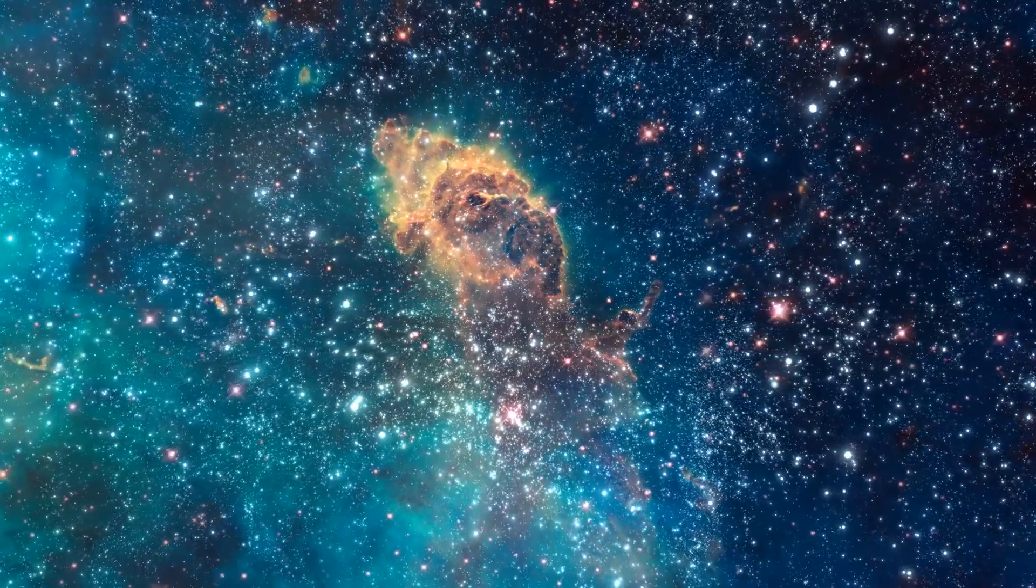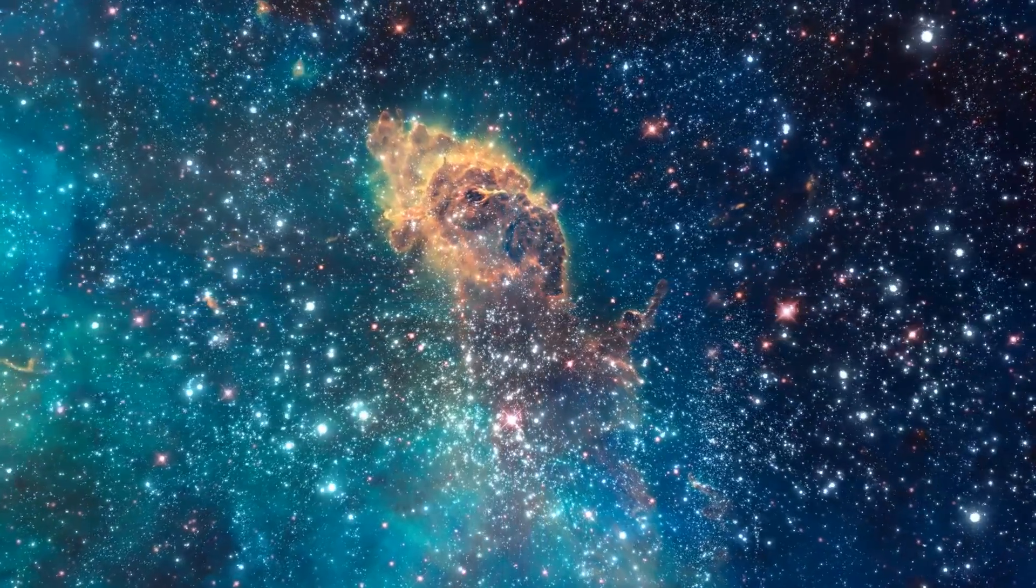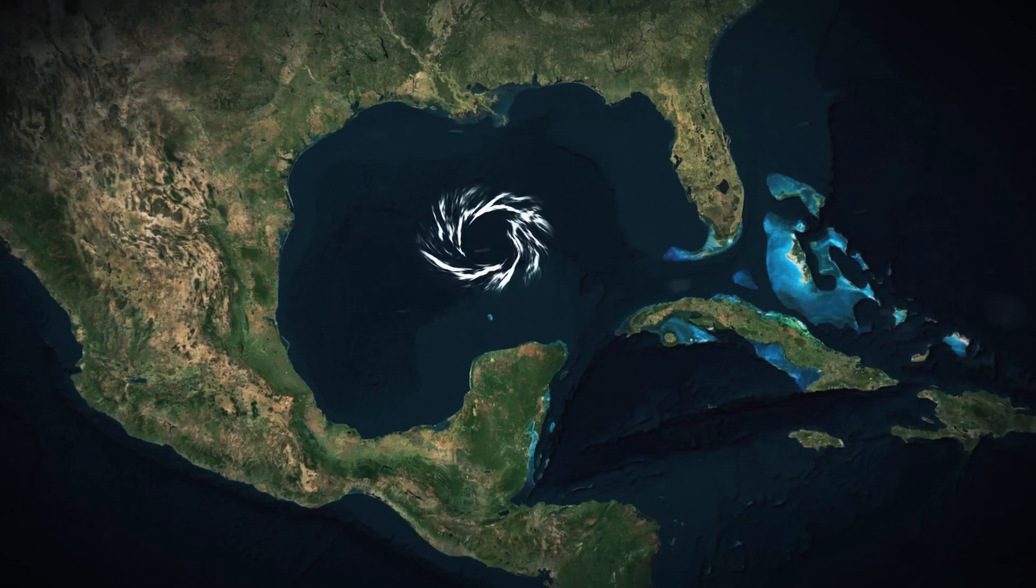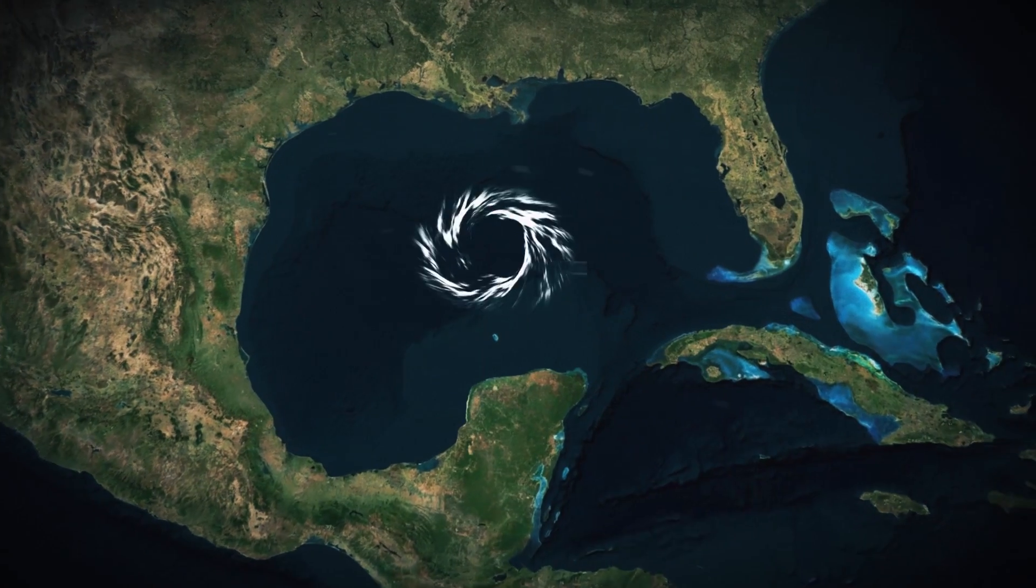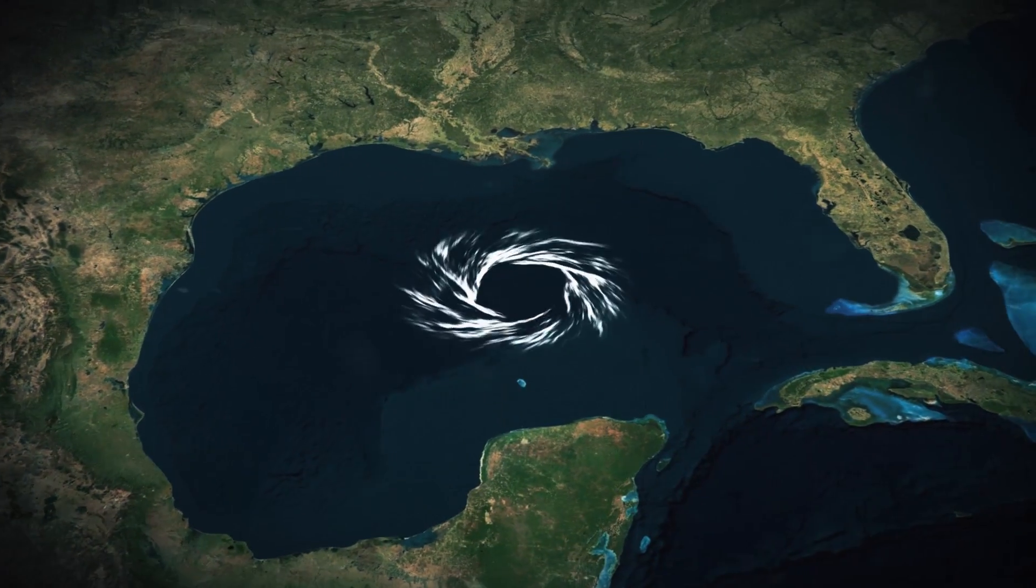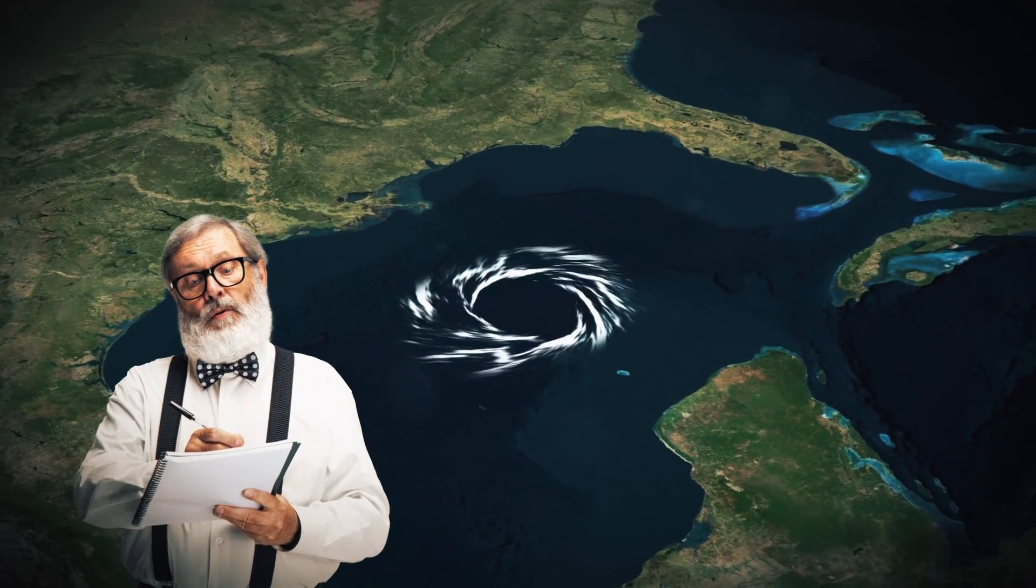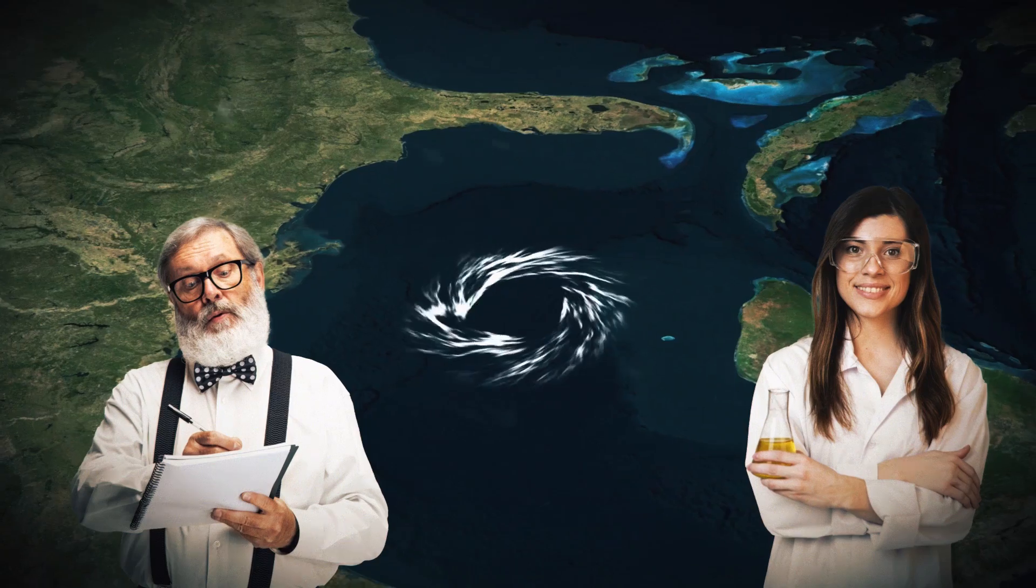Black holes aren't just found in the icy depths of space, they can also be found churning in the waters right here on Earth. There are massive ocean eddies on Earth that are theoretically equal to the black holes in space, according to researchers from ETH Zurich and the University of Miami, which means that nothing can escape from them.